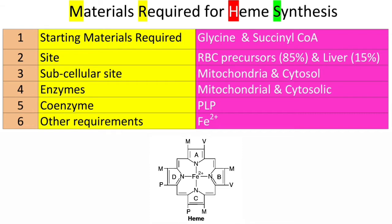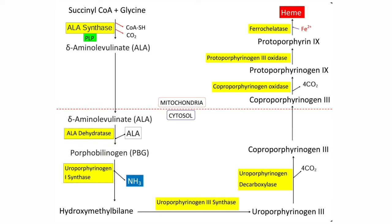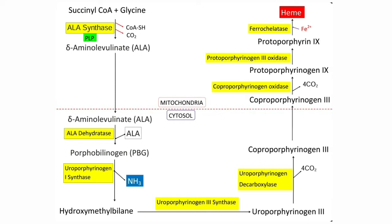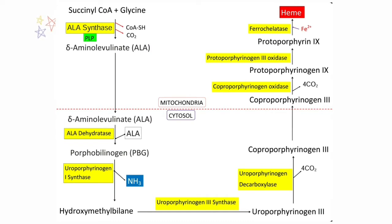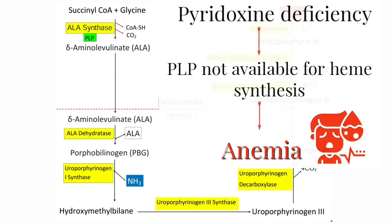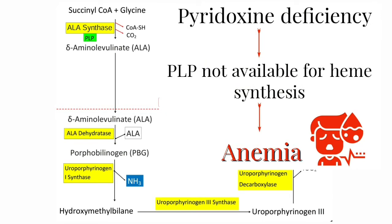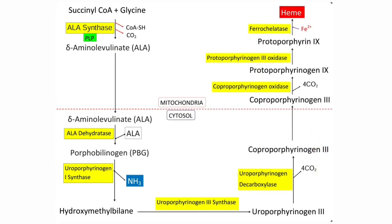Ferrous iron is also required and is needed in the last step. In the first step of heme synthesis, which takes place in the mitochondria, condensation of glycine and succinyl-CoA occurs. Glycine is a non-essential amino acid and succinyl-CoA is an intermediate of the TCA cycle. This condensation forms delta-aminolevulinic acid (ALA). This reaction is catalyzed by ALA synthase, which requires the coenzyme pyridoxal phosphate. That is why deficiency of pyridoxin leads to anemia. ALA synthase is the rate-limiting enzyme, also called the key enzyme of heme synthesis, and it is also an inducible enzyme.